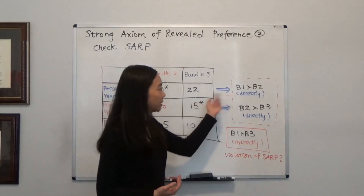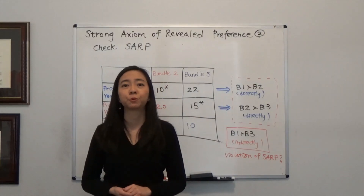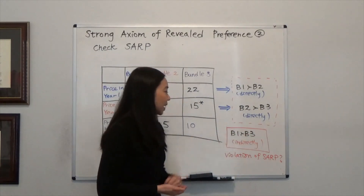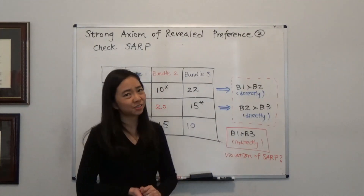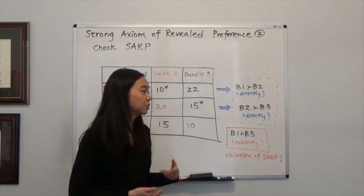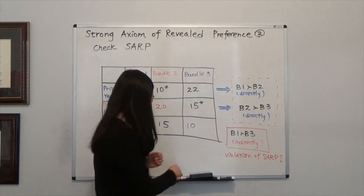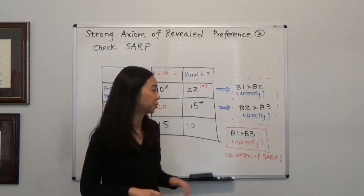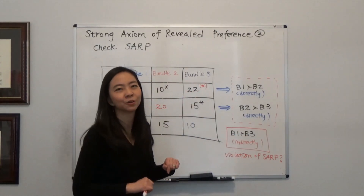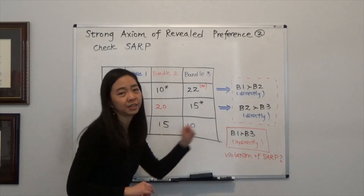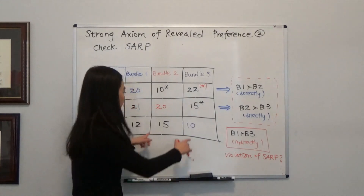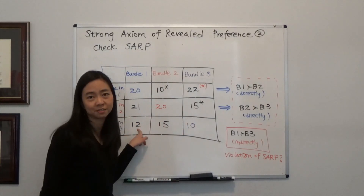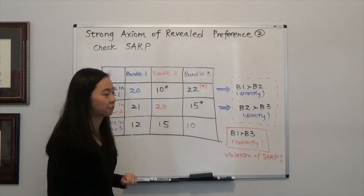Now, since bundle one is directly revealed preferred to bundle two, and bundle two is directly revealed preferred to bundle three, I can conclude that bundle one is indirectly revealed preferred to bundle three. To see if there is a violation of SARP, I just need to check if bundle three is also revealed preferred to bundle one — whether directly or indirectly. If yes, there would be a violation of SARP. The star in parentheses indicates that bundle one is the bundle I now know is indirectly preferred over bundle three. Looking at the data, we cannot see that bundle three is preferred to bundle one, because bundle one was not affordable in any relevant year. So there is no violation of SARP in this situation.